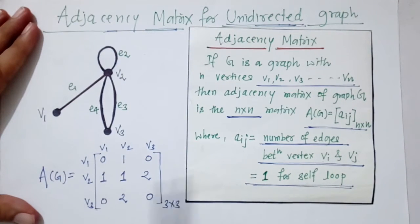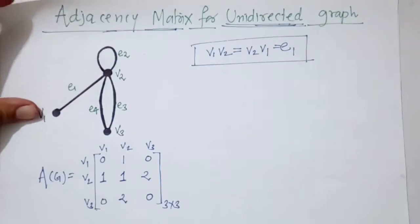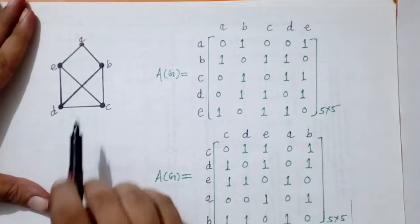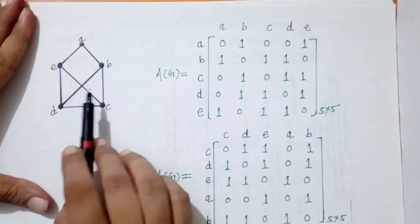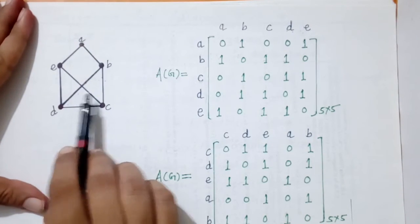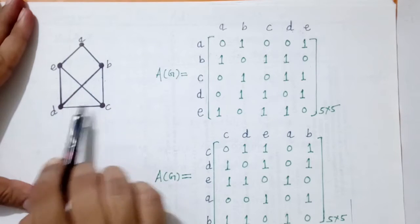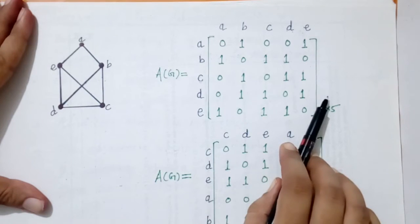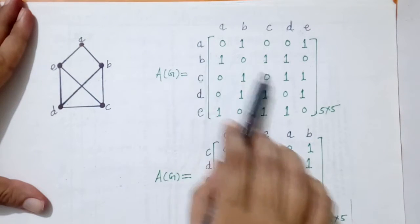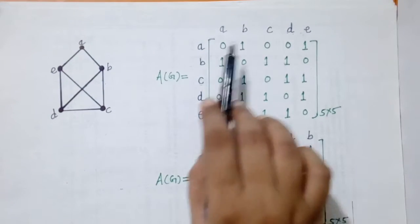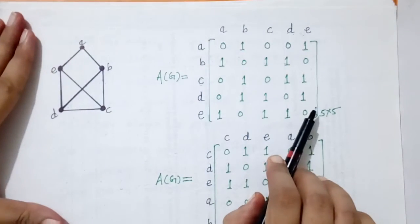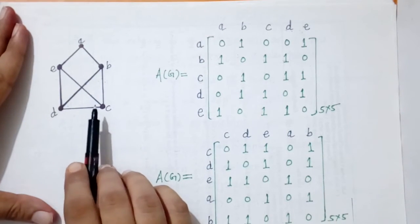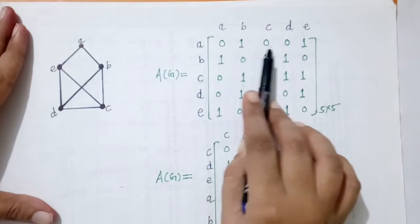Next we look at another example. This graph is a simple graph because there are no loops or parallel edges. For a simple graph, the adjacency matrix contains only the elements 0 and 1. Therefore, this adjacency matrix is also called a Boolean matrix, since it has only two possible values: 0 and 1.